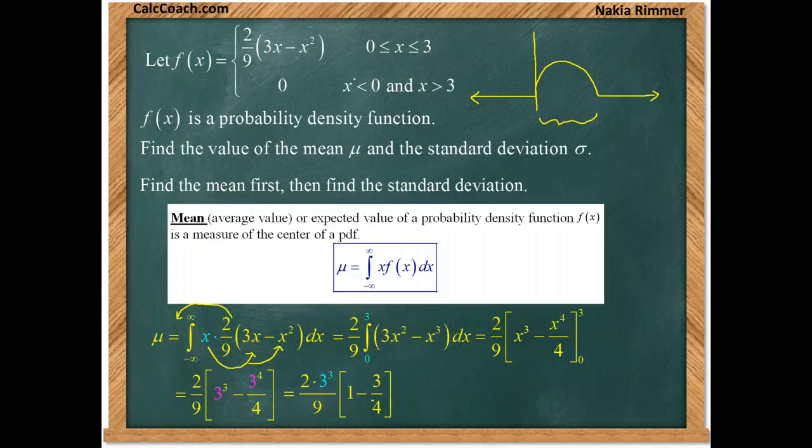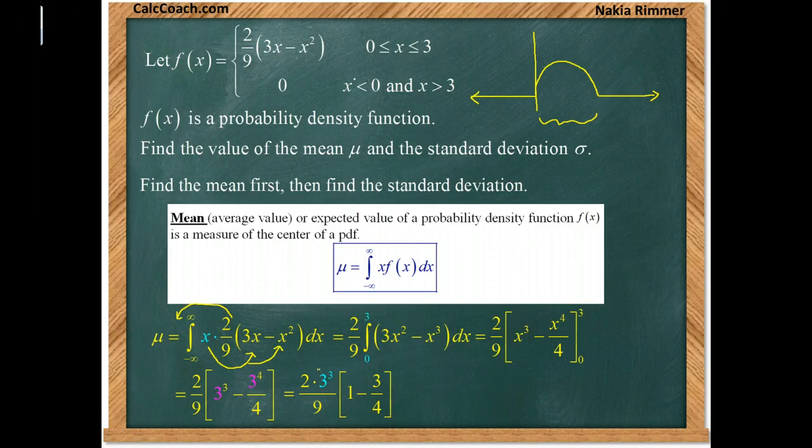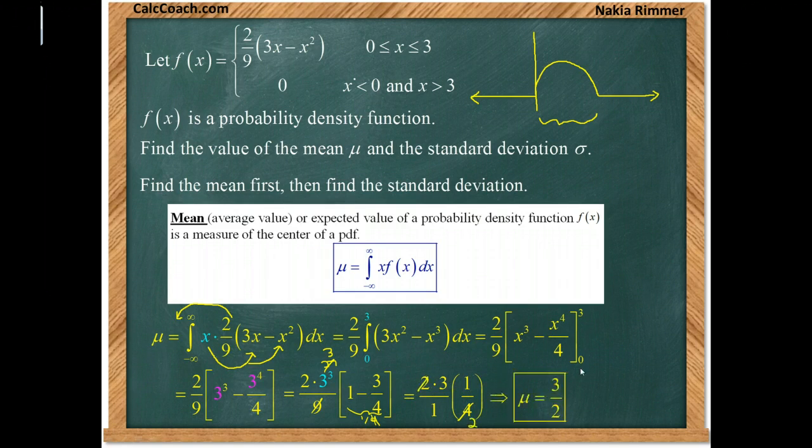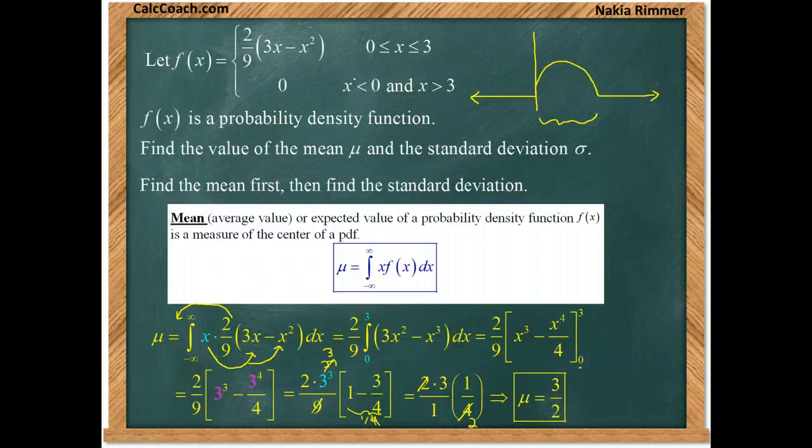And 1 minus 3 fourths is just 1 fourth. And then what we can do with this 3 cubed is, that's a 27, we can use that to cancel the 9 and that could turn this into a 3. This guy here is a fourth. So we'll be looking at 2 times 3 times a fourth or 3 halves. That's our mean. Once you cancel the 2 and the 4th. Alright great, we have the mean.